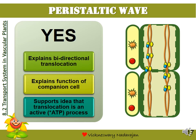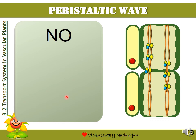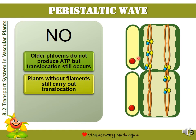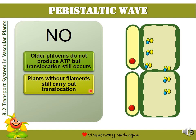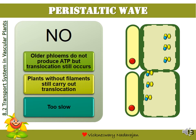However, the peristaltic wave hypothesis is still not completely accepted because of some problems. When the phloem becomes old, the companion cells stop producing ATP, yet translocation still occurs in the absence of ATP. Secondly, there are some plants that do not show the presence of cytoplasmic filaments, and yet translocation continues to occur. Also, the same problem as with cytoplasmic streaming — peristaltic wave is too slow. So we still do not have a perfect hypothesis to explain translocation.